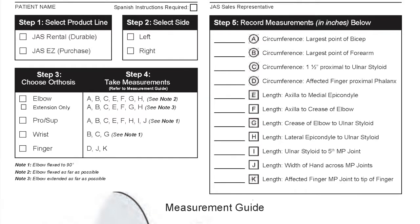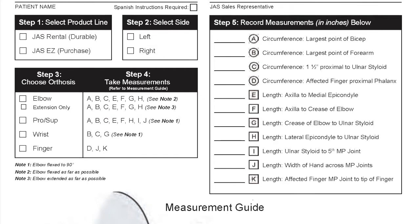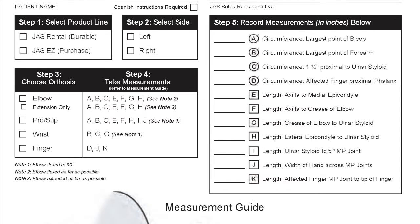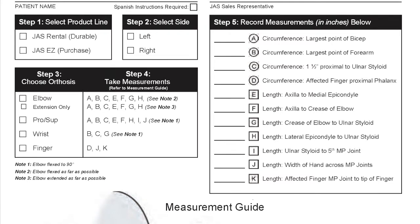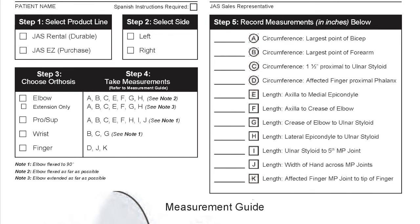Choose the orthosis. For the elbow, if the patient is needing help with only extension, mark extension only. If the patient is lacking in both flexion and extension, leave this box blank.